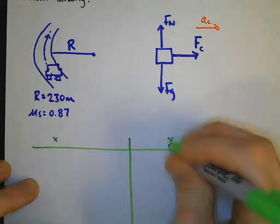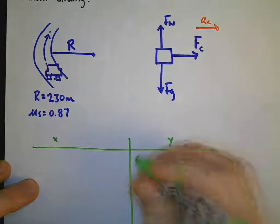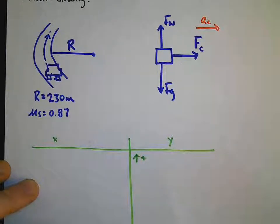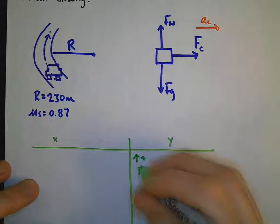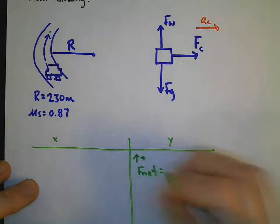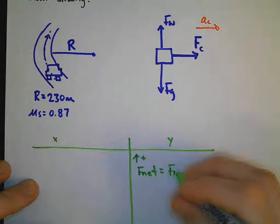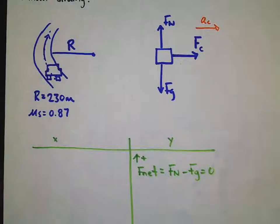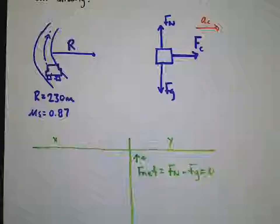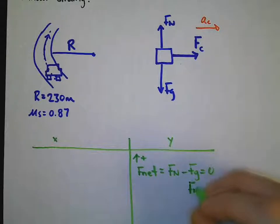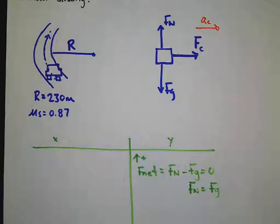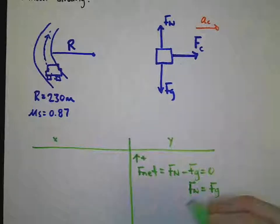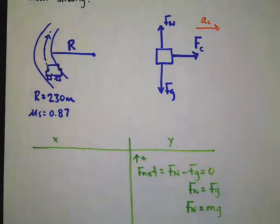If I observe my y direction first with up being positive, I see that my net force in the y direction will be my normal force minus the force of gravity. And that will be zero because it is at equilibrium. This tells me that the normal force will be equal to my gravitational force. Now, why is that important? We'll find out in just a second. But that means that the normal force is my mass multiplied by my gravity.